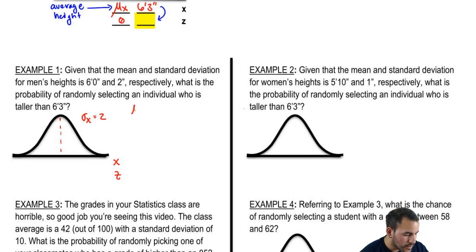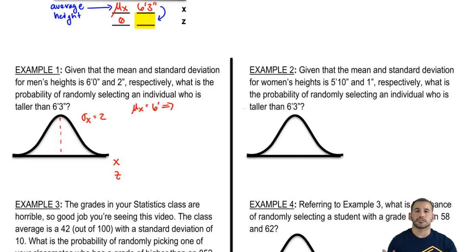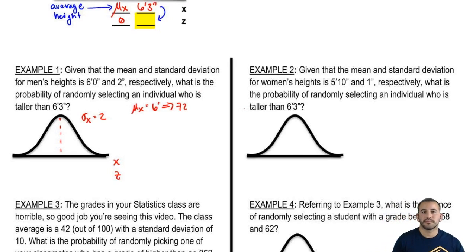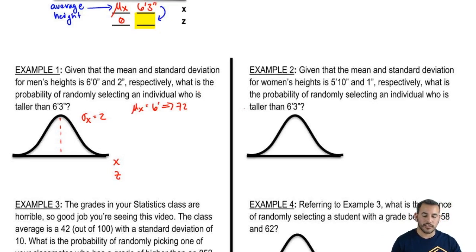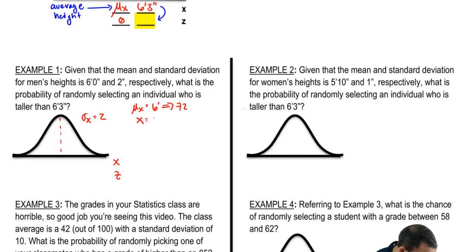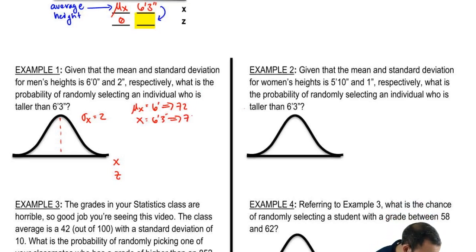The mean is 6'0", which converts to 72 inches — 12 inches per foot times 6. Then our x-value of 6'3" is just 3 more inches than 6'0", so that's 75 inches.